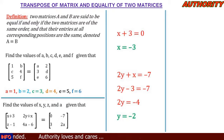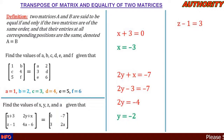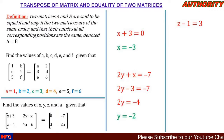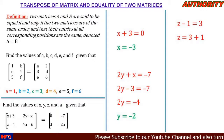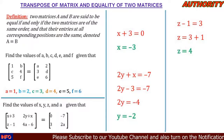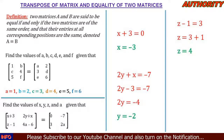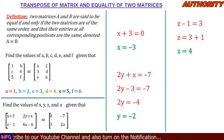For c21 (row 2, column 1): z - 1 = 3. Taking -1 to the other side: z = 3 + 1 = 4. So z = 4. So far: x = -3, y = -2, z = 4.